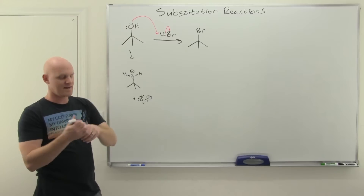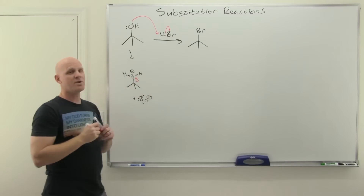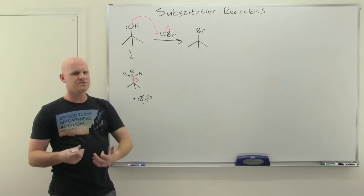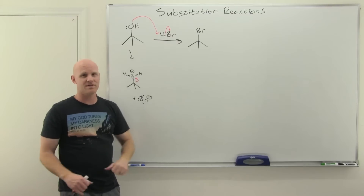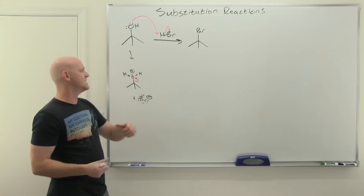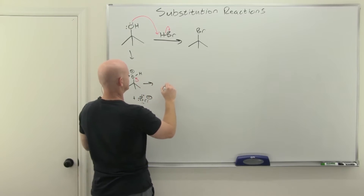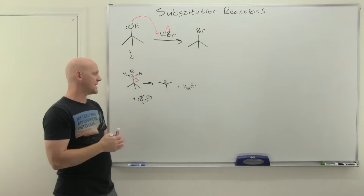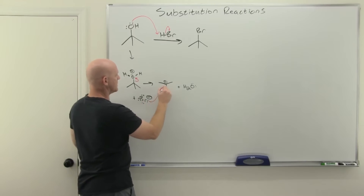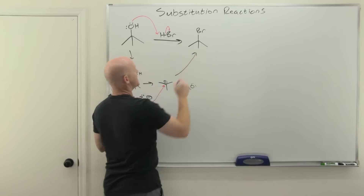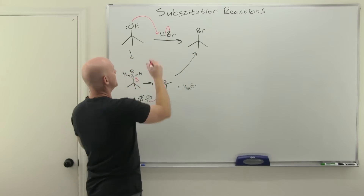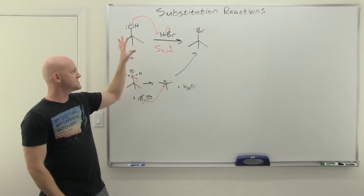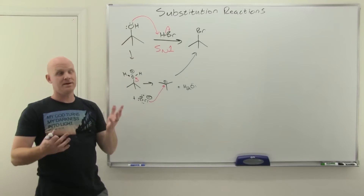In this case the substrate is tertiary, so we can't do backside attack. But we're in a highly protic solution — in fact, a super protic solution since we have a strong acid — so a carbocation can form. We get this lovely tertiary carbocation, and that's where bromide comes in and attacks. This is totally SN1. This works really nicely for tertiary and secondary alcohols, since SN1 is effective for those.